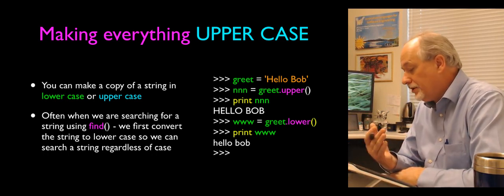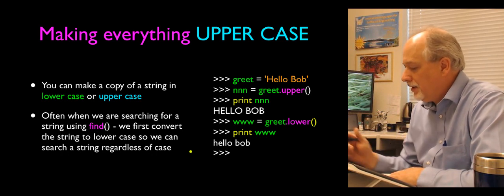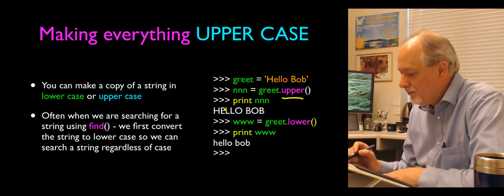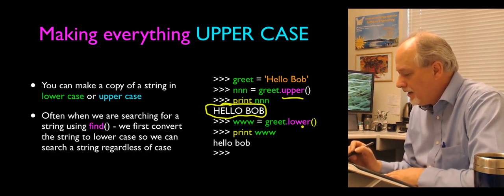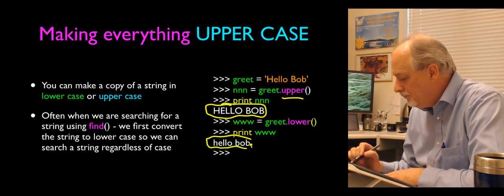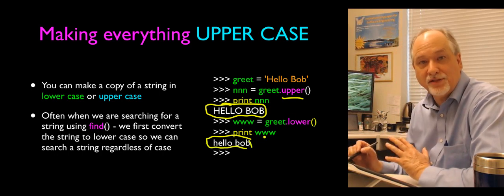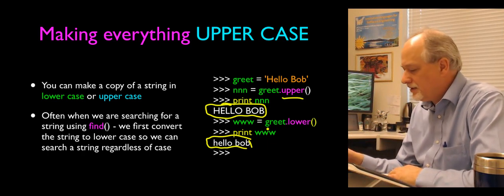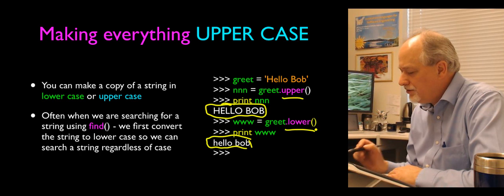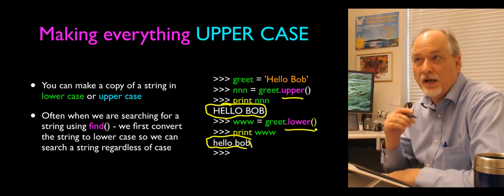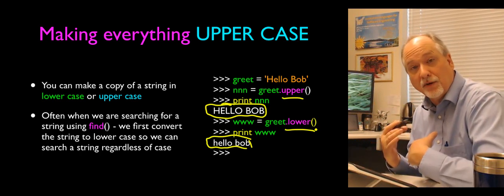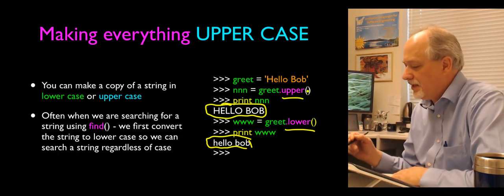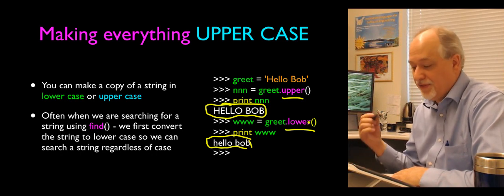There's a lower and also an upper method. Upper — which might better be named 'shouting' — gives an uppercase copy of the variable. So 'Hello Bob' becomes 'HELLO BOB'. And lower gives 'hello bob'. These are both ways to get copies of uppercase and lowercase versions. One reason to use lower is if you're doing searching and want to ignore case — convert the whole thing to lowercase, then search for a lowercase string.